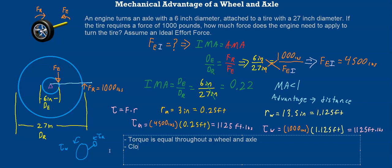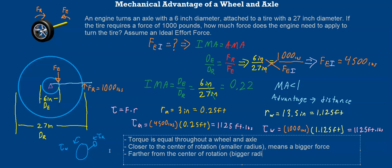If we are closer to the center of rotation, or in other words, we have a smaller radius, this means we have a bigger force. The opposite is true as well. If we are farther from the center of rotation, or we have a bigger radius, this means we have a smaller force. That's essentially how torque works and the difference between force and torque in a wheel and axle system.